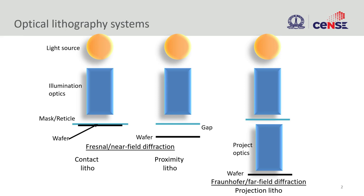By now we should be familiar with three different types of system. In this session we are going to look at projection lithography, where we have added projection optics and there is a very large gap. At the same time we have put some really interesting optics in order to project the image onto the wafer.